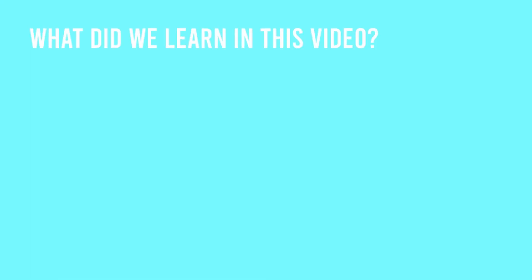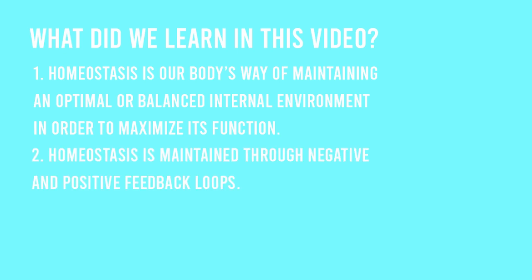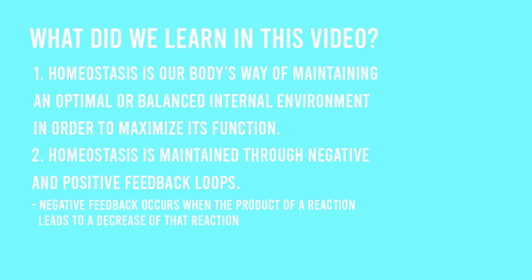So what did we learn in this video? First, we learned that homeostasis is our body's way of maintaining an optimal or balanced internal environment in order to maximize its function. Second, we learned that homeostasis is maintained through negative and positive feedback loops. Negative feedback occurs when the product of a reaction leads to a decrease of that reaction, while positive feedback occurs when the product of a reaction leads to an increase of that reaction.